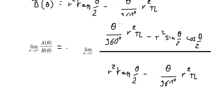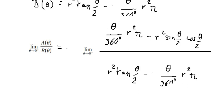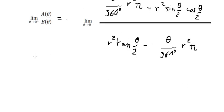After we have everything, we can find the limit. When theta approaches zero, we substitute zero in here, here, here, and here. We can see that we get zero over zero. So in this case, we can use L'Hôpital's rule.